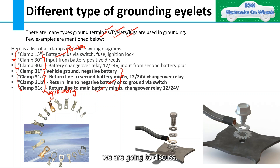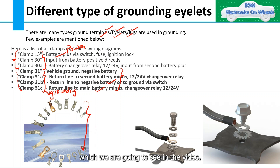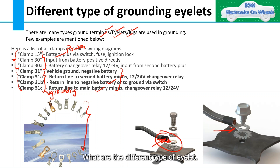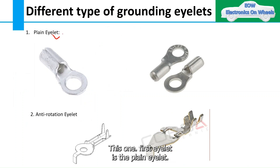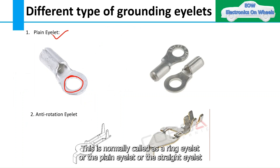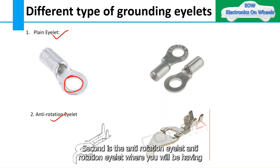On these clamp signals, what types of eyelets are used — we are going to discuss that. You can see here some examples of the eyelets we are going to cover in the video. The first eyelet is the plain eyelet, also commonly called the ring eyelet or straight eyelet. This type is used in many common applications.